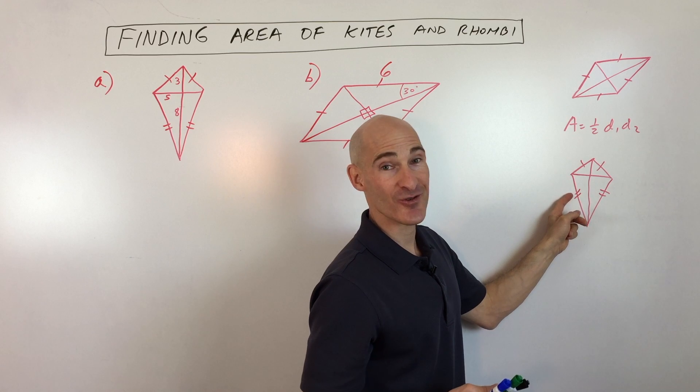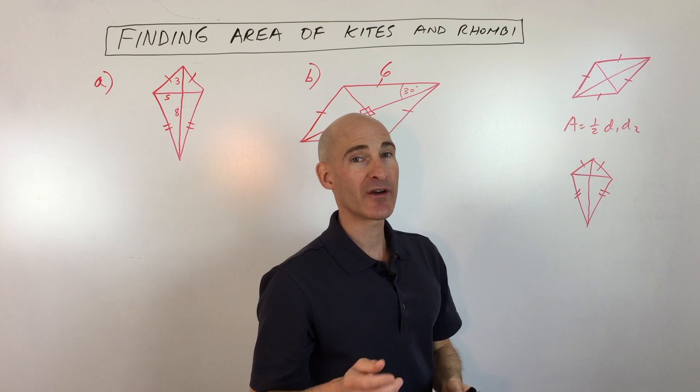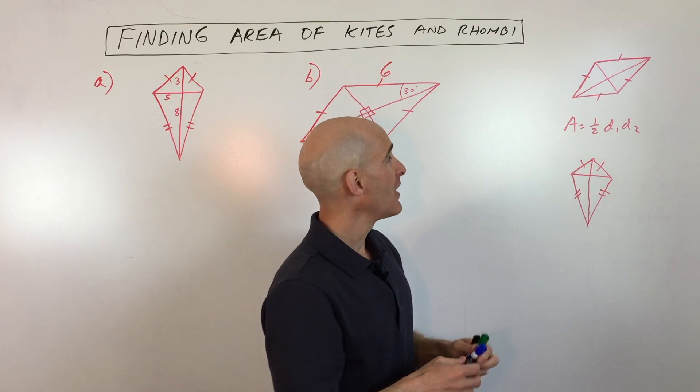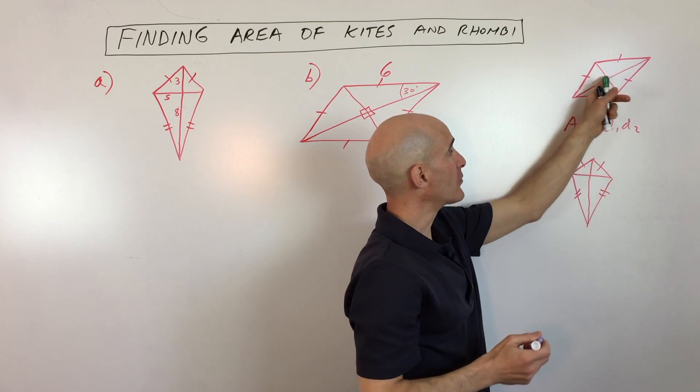In a rhombus all four sides are congruent. The interesting thing to note about kites and rhombi is that the diagonals are actually perpendicular to one another, so they form right angles here where they cross.